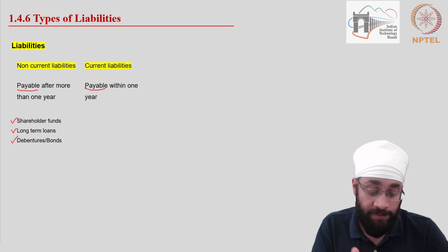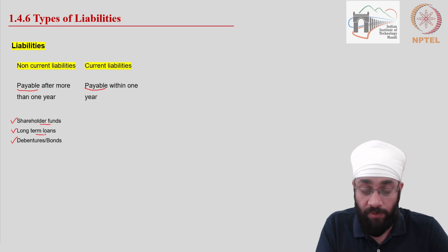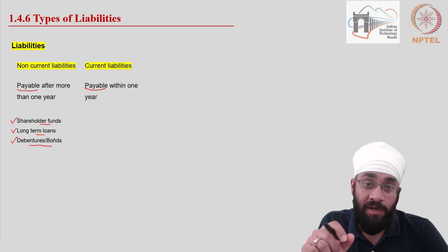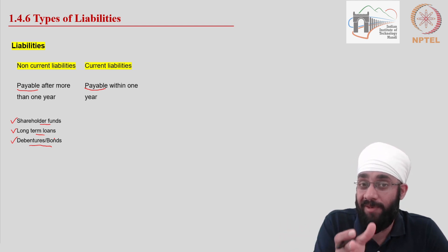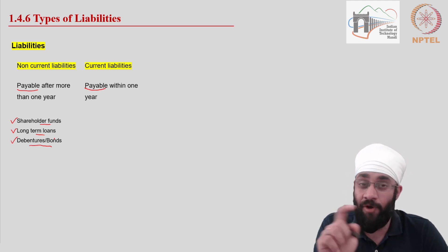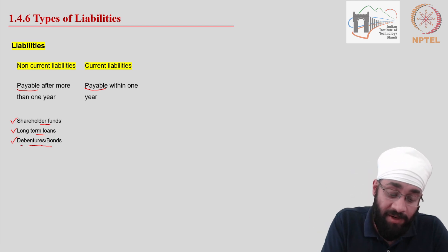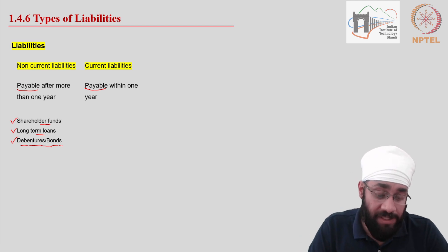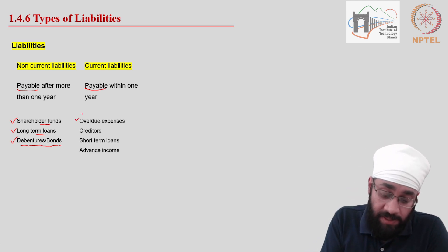Examples of non-current liabilities are shareholder funds, long-term loans, debentures, and bonds. Shareholder fund is the money brought in by investors. Long-term loans are from banks. Debentures and bonds are loans taken from the general public — instead of taking a loan from a bank, a company can take a loan from the public. When you raise a loan from the public, you can call it a debenture or bond. Bond is more popular in international markets; debentures are used more in India, though that market is not as active as international markets.